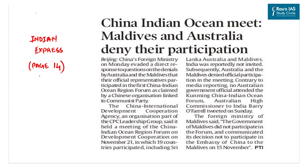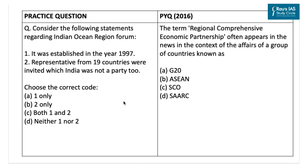The next article in The Indian Express talks about the China-Indian Ocean region meet, under which Maldives and Australia denied their participation. This meet marks the first China Indian Ocean Region Forum as claimed by the Chinese organization. UPSC has previously asked questions related to various international organizations in the news, including a question on RCEP — the Regional Comprehensive Economic Partnership — in 2016. A practice question can be framed with reference to the China Indian Ocean Region Forum. The first statement says it was established in 1997, which is incorrect — it was the Indian Ocean Rim Association (IORA) that was established in 1997.